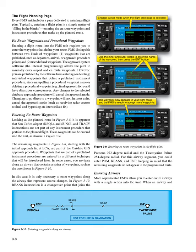Any changes to the selected database approach procedure will cancel the approach mode. Changing to go direct to a waypoint will not, in most units, cancel the approach mode, such as receiving radar vectors to final and bypassing an intermediate fix. Entering on-route waypoints: looking at the planned route in Figure 3-8, it is apparent that San Carlos Airport (KSQL), and Sunol and Tracy intersections are not part of any instrument procedure that pertains to the planned flight. These waypoints can be entered into the unit, as shown in Figure 3-9. The remaining waypoints in Figure 3-8, starting with the initial approach fix at ESA, are part of the Oakdale GPS approach procedure.